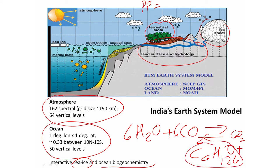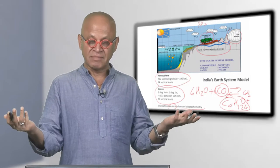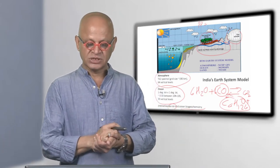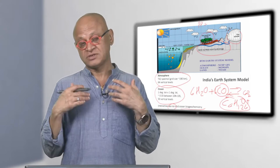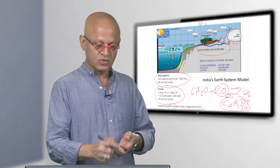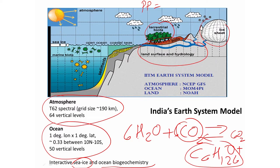Primary production is essentially a measure of how much inorganic carbon like carbon dioxide is converted to organic carbon. We looked at the satellite map of ocean chlorophyll which is an indicator of how much primary production is happening. The same satellite also measures the chlorophyll on land.